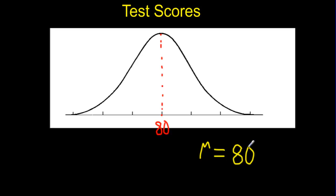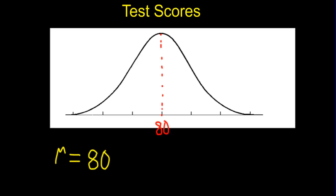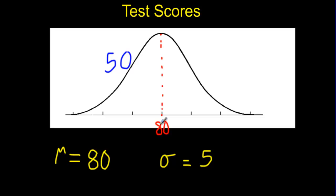Now, something else we want to talk about with our distribution is standard deviation. The standard deviation is a measure of how spread out the data is. The larger the standard deviation, the more spread out our data is; the smaller the standard deviation, the more compressed the data is. For this example with a mu of 80, let's say we have a standard deviation — sigma — of 5 points. Since our data is distributed normally and our average is 80, we have 50% of test scores falling below 80% and the other 50% falling above 80%.